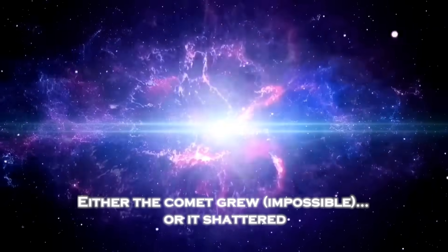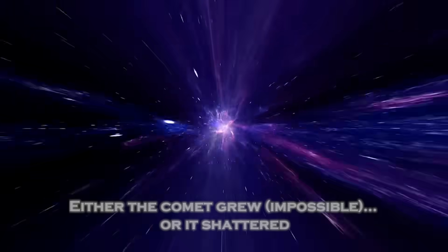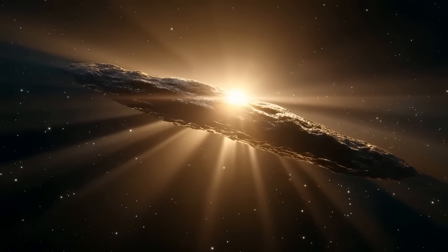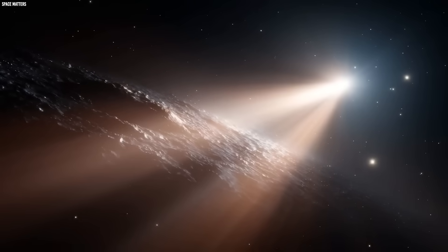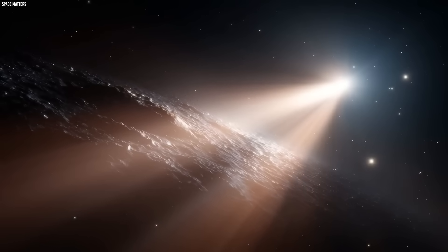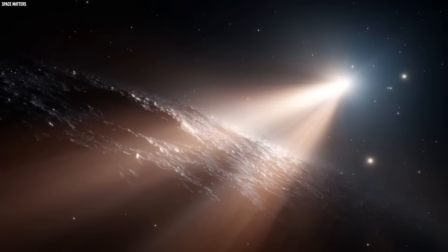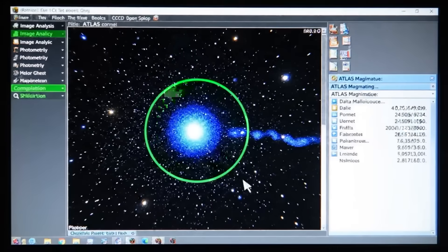Which means only one thing. Either the comet grew, impossible, or it shattered. This is the exact moment Avi Loeb steps in. Loeb realizes something extraordinary. If 3I Atlas split into 16 fragments, each fragment would have its own surface area, and the combined surface area would match the required 14 kilometer value exactly. The math is perfect. Too perfect.